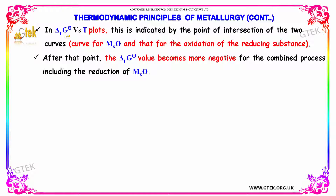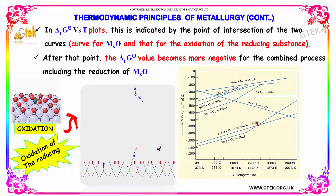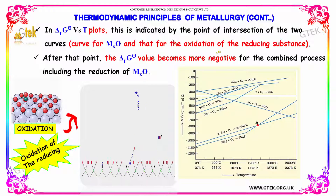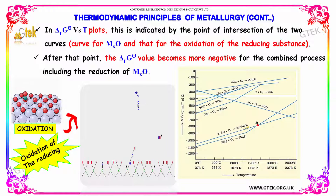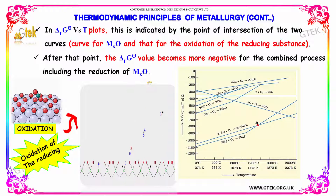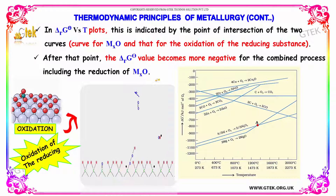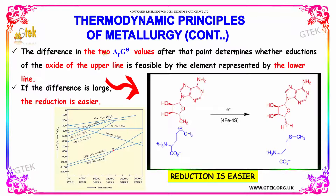In delta_r G° versus T plots, this is indicated by the point of intersection of the two curves — the curve of the metal oxide and that of the oxidation of the reducing substance. After that intersection point, the delta_r G° value becomes more negative for the combined process including the reduction of the metal oxide. The difference in the two delta_r G° values after the point determines whether reduction of the oxide of the upper line is feasible by the element represented by the lower line.